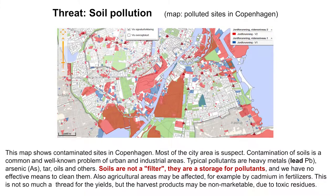Another threat, particularly in urban areas, is soil pollution. All soils in old cities are polluted. A map of Copenhagen shows that most of the inner city is suspected of soil contamination — heavy metals, arsenic, tar, and oil. On agricultural land we also have pollutant problems, for example cadmium in phosphate fertilizer, which accumulates over time in the topsoil. This is not so much a problem for yields but means our harvest products are toxic, cannot be marketed, and are worthless.